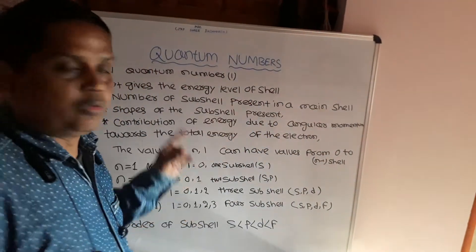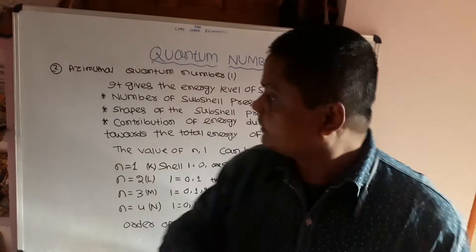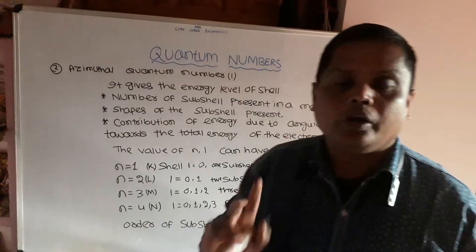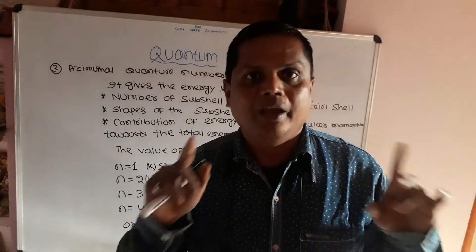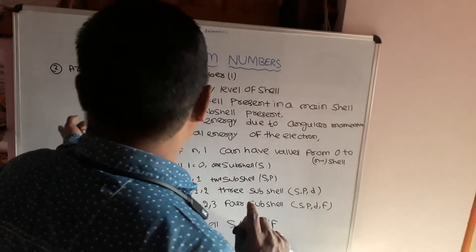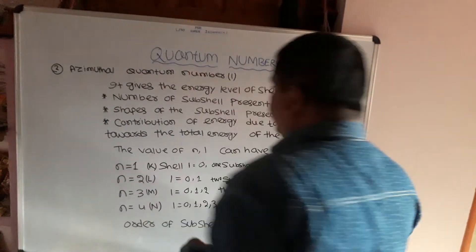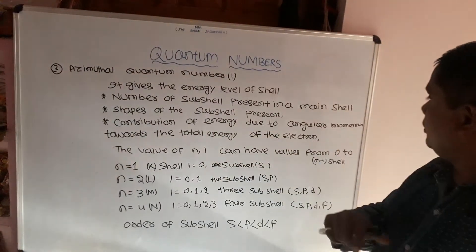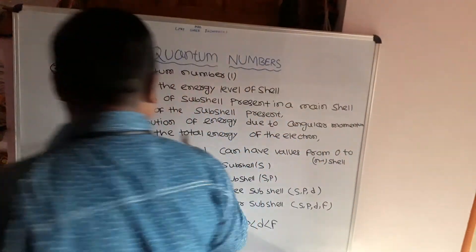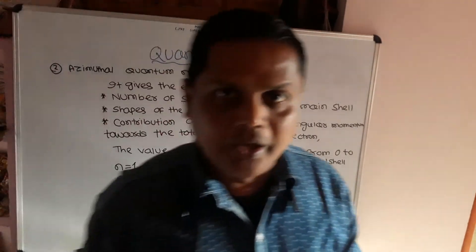The second one is the azimuthal quantum number. It gives the number of subshells present in a main shell, the shapes of the subshells, and the contribution of energy due to the angular momentum towards the total energy of the electrons.